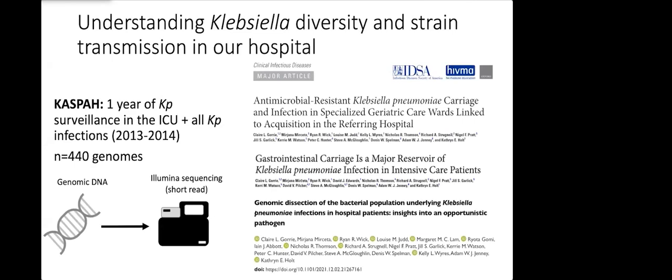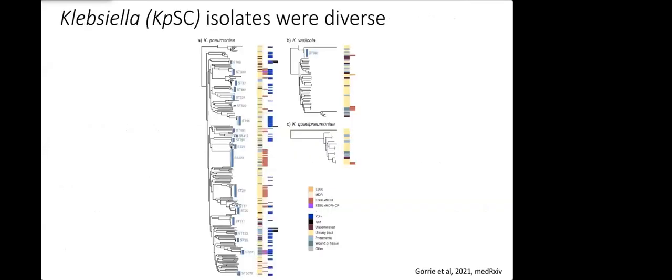At the time, one of the PhD students in our group, Claire Gorrie, worked on this data and she spent quite a lot of time understanding the strain transmission dynamics, which you can find in these three papers here. One of the main findings that Claire had was that isolates that we were pulling from the hospital called Klebsiella pneumoniae actually belonged to three different species.